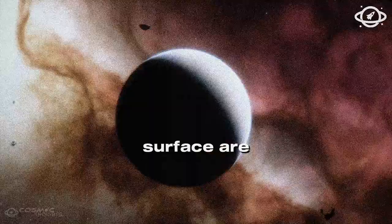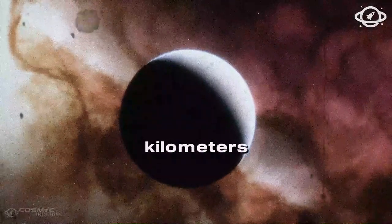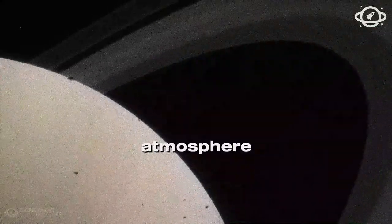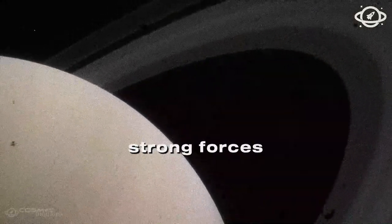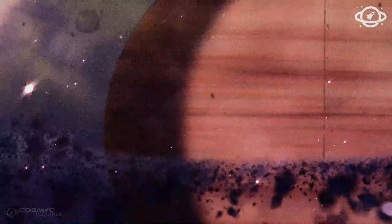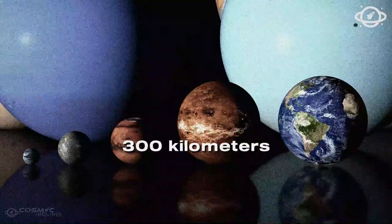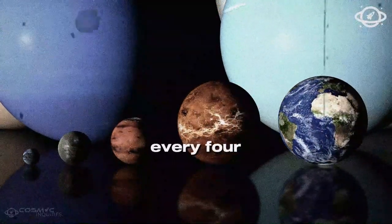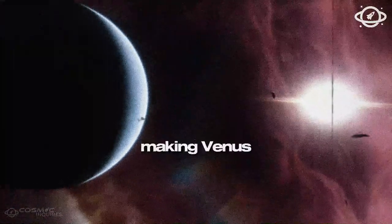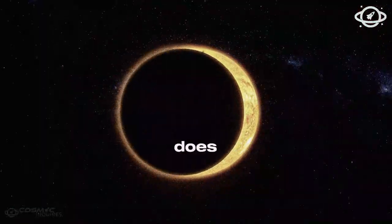Winds on Venus' surface are slow, only a few kilometers per hour, but due to the dense atmosphere, they exert strong forces, shifting small rocks and dust. In contrast, winds at the cloud tops reach speeds of 300 kilometers per hour, circling the planet every four to five Earth days, making Venus seem to rotate much faster than it actually does.